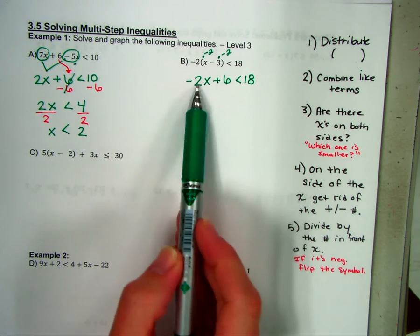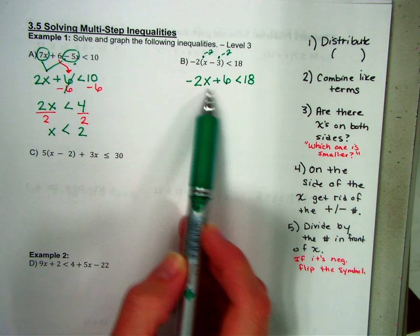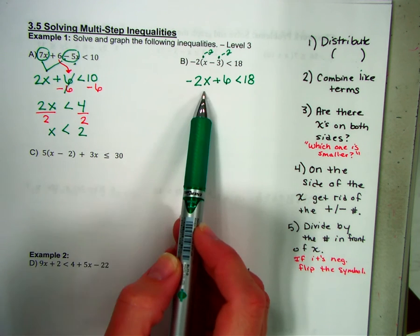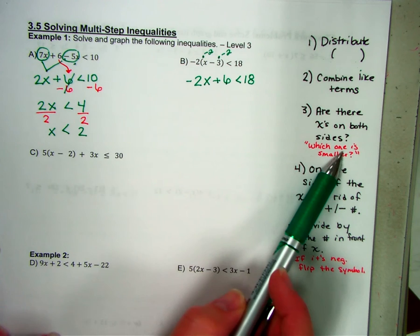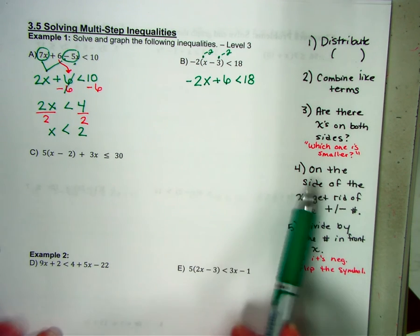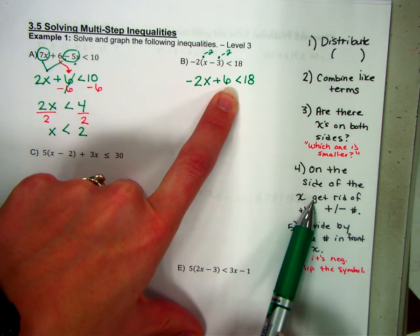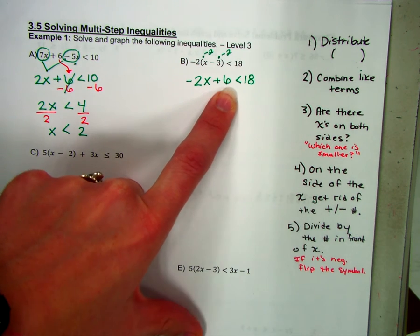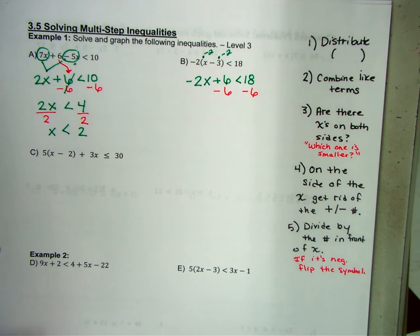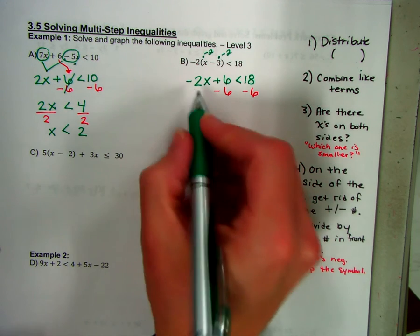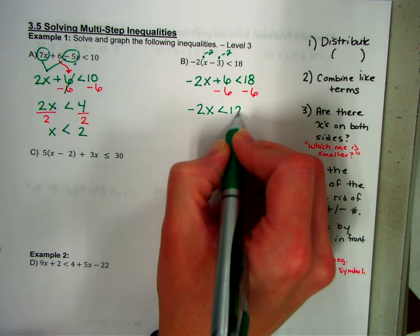Okay. So second step, combine like terms. Are there more than one x over here? Is there more than one x over here? No. Is there more than one number by itself over here? No. So there's nothing I can combine. So then I go down to the next one. Are there x's on both sides? No. Down to the next one. On the side of the x, that's this side over here, get rid of the plus minus number. So I'm going to subtract 6 from both sides. So minus 6. Minus 6. So negative 2x is less than 12.